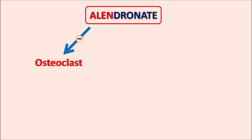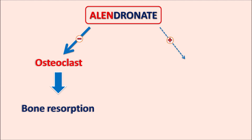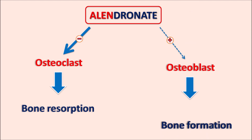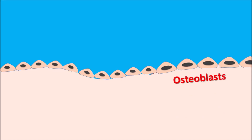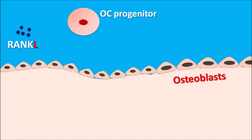Alendronate mainly shows its inhibitory activity on osteoclast formation. Osteoclasts result in bone resorption. Alendronate inhibits bone resorption by inhibiting osteoclast activity but has very little significant activity on osteoblasts. Osteoblasts are mainly responsible for bone formation. Osteoblasts release an important mediator called RANKL — the ligand for the RANK receptor (Receptor Activator of Nuclear Factor Kappa B). This RANKL ligand released from osteoblasts acts on osteoclast progenitor cells.